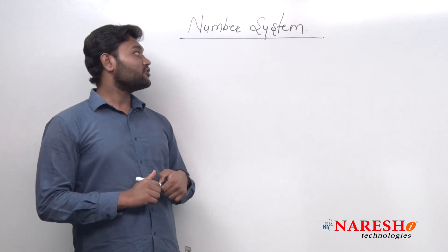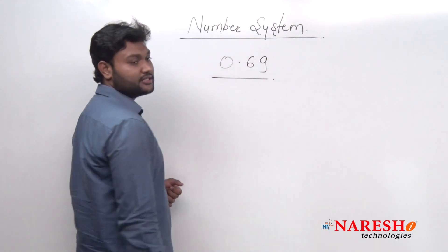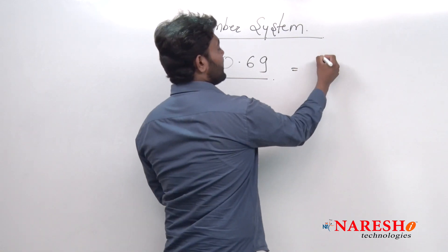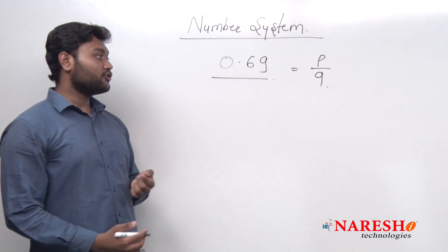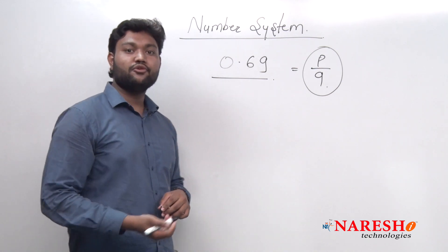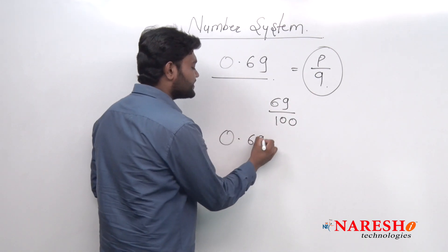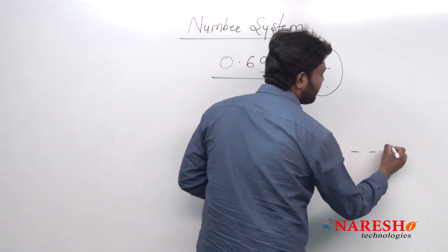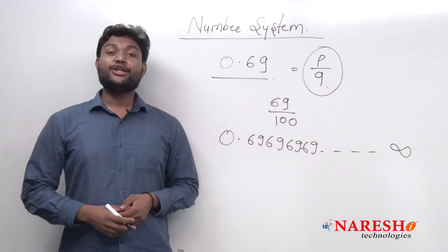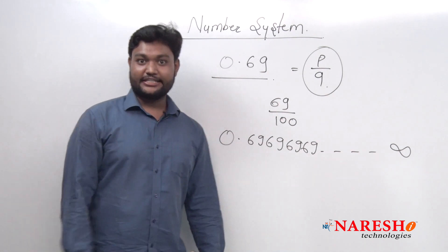So my dear student, first of all, I am having one question for you people. Suppose 0.69 is there — this is what? A decimal type of number. Now, you have to convert this number into fraction. Fraction means the number which is having the format P by Q. That kind of format is known as fraction. So how to represent 0.69 in fraction? Obviously, we would be saying 69 upon 100. But what if we are having the number 0.696969696969 up to infinity? How to convert this number into fraction? This is a very typical question for us. But don't worry — from this video, you will learn how to convert such type of numbers into fraction.